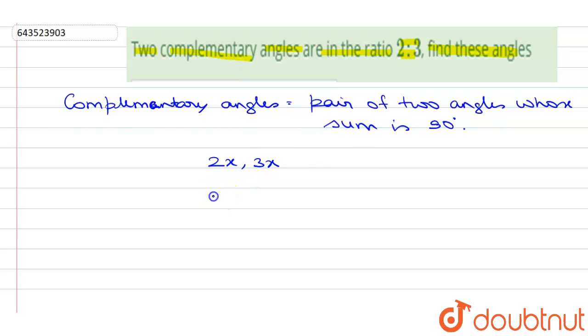Since these two are complementary, it means the sum of these two angles should be equal to 90 degrees. Simplifying it, 3 plus 2 equals 5x, which is equal to 90 degrees. So from here we can find the value of x as 90 upon 5, which is equal to 18.